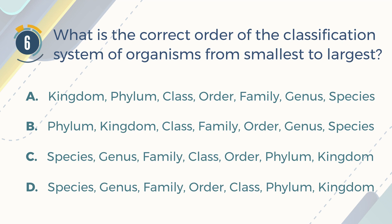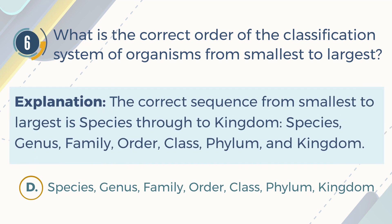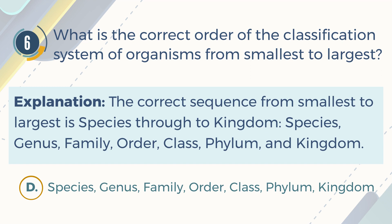The correct answer is D. Species, Genus, Family, Order, Class, Phylum, and Kingdom. Explanation: The correct sequence from smallest to largest is Species, Genus, Family, Order, Class, Phylum, and Kingdom.